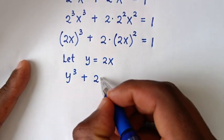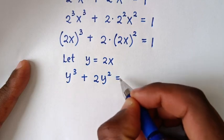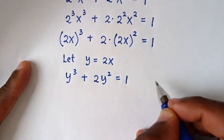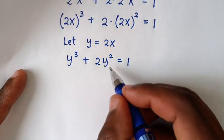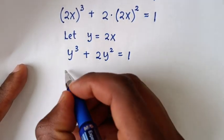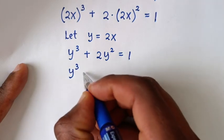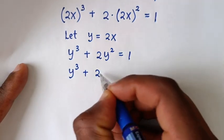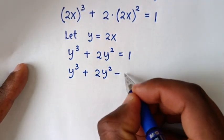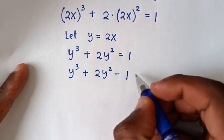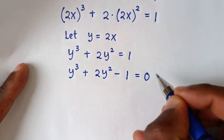With the substitution y = 2x, our equation becomes y³ + 2y² = 1. Taking the 1 to the left side gives y³ + 2y² - 1 = 0.